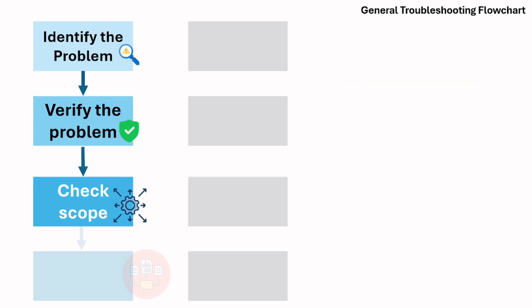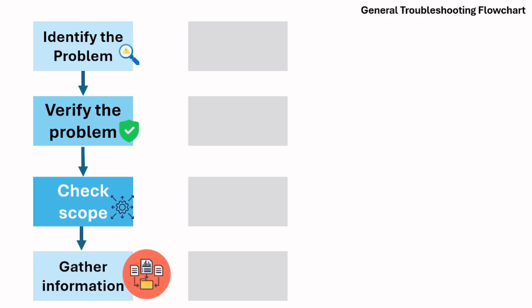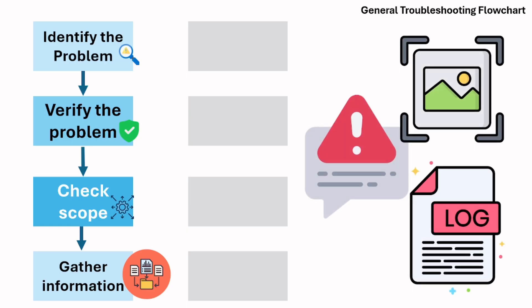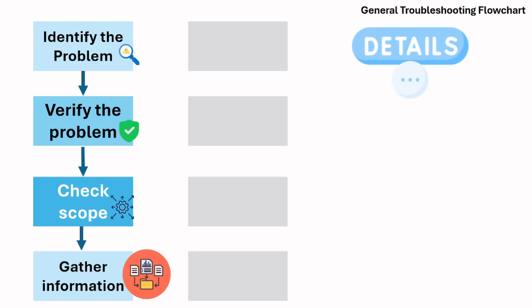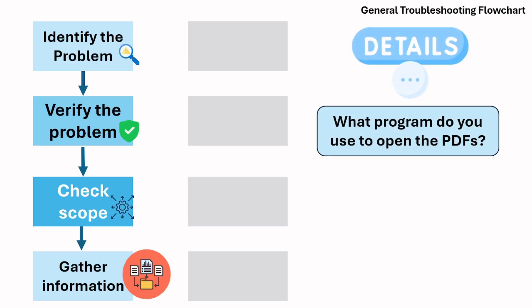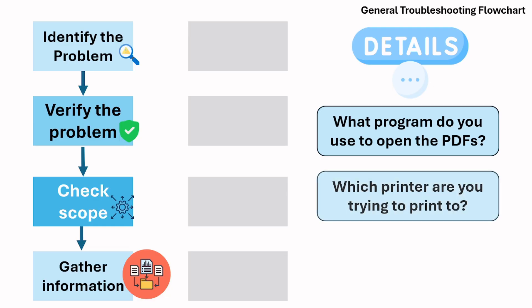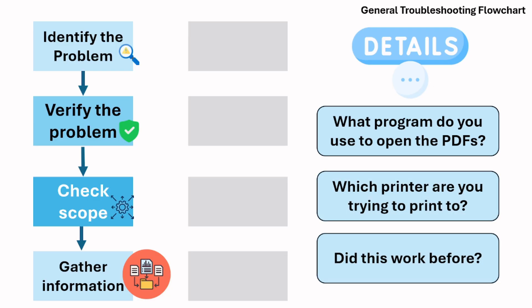The next step is gathering information. Now that you know exactly what the issue is, you can start collecting logs, screenshots, and test results. In our issue, we can check more details: What program are they using to open the PDFs? Which printer are they trying to print to? Did this work before? This step narrows down the possible root causes and prevents guesswork.